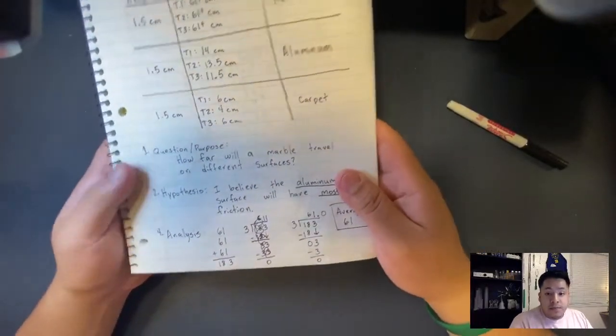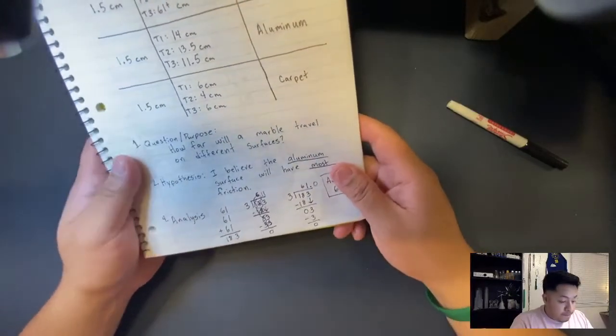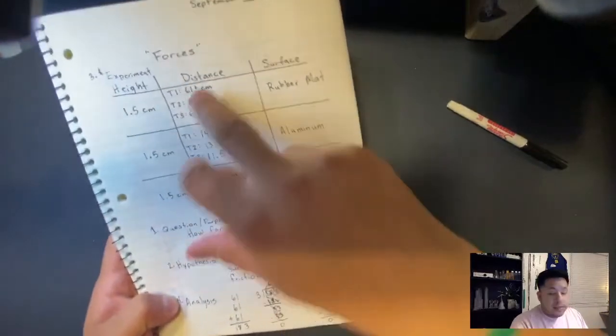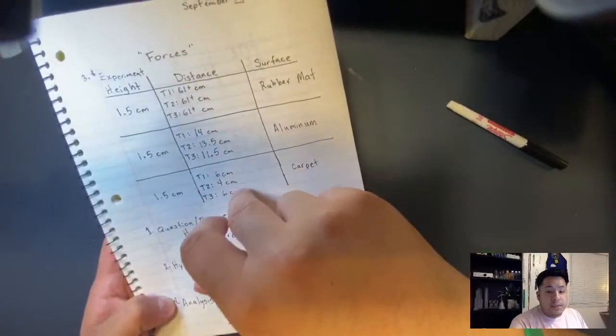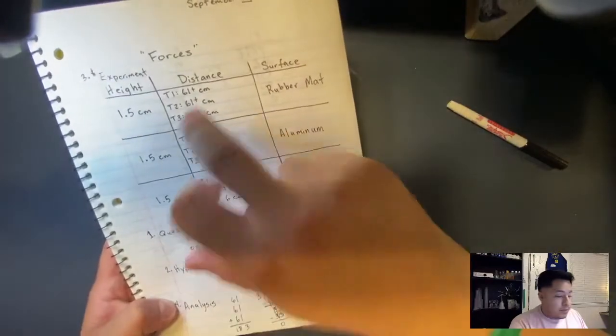If you want to see it, if you want to see my experiment, watch the extended version, okay? Number four, analysis. I added these three numbers up, these three, and these three separately, and then I summed up and got the total. So 61, 61, 61, which is 183.